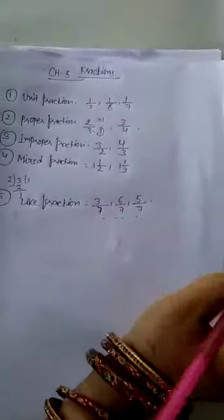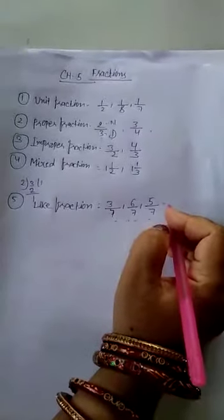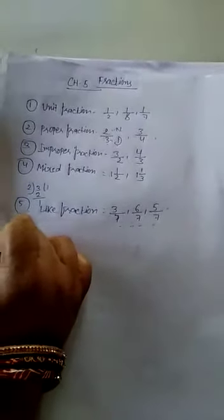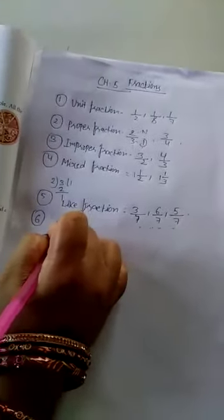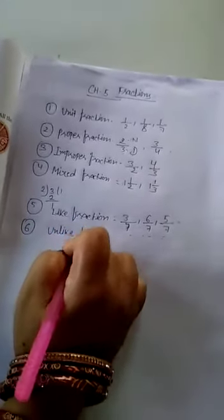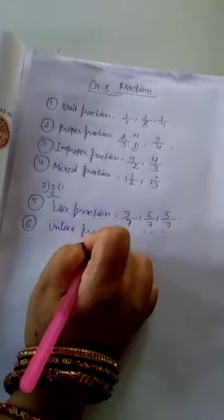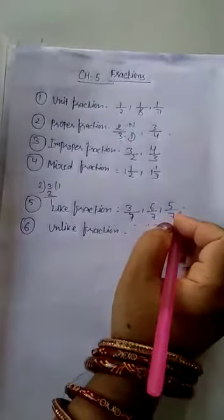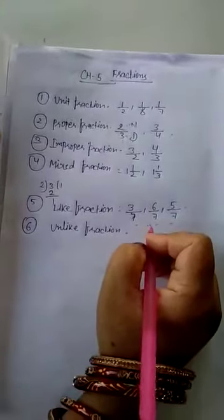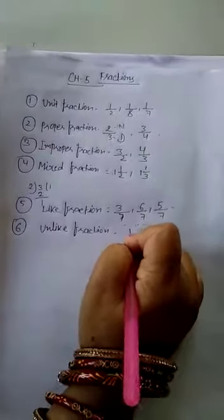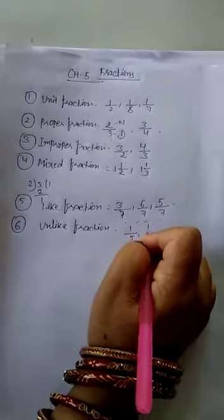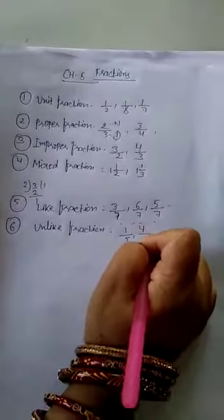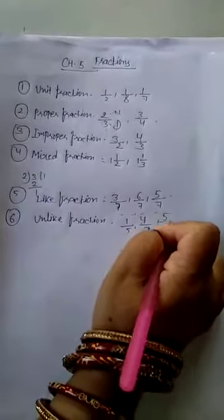Unlike Fractions: Fractions with different denominators are called unlike fractions. For example, 1 by 5, 4 by 7, and 5 by 8 — these have different denominators, so they are unlike fractions.